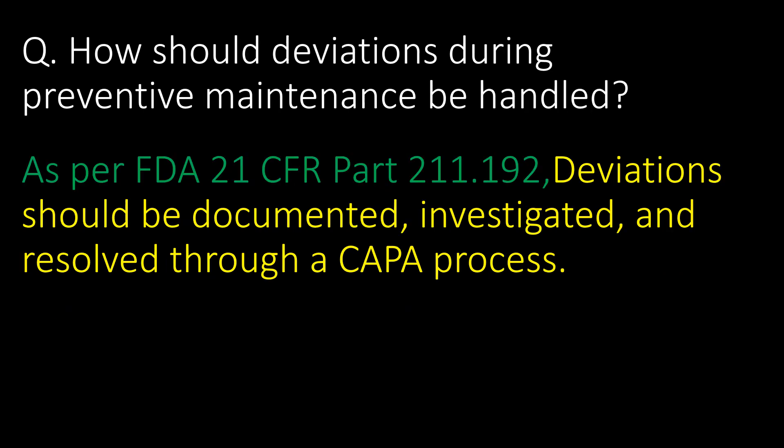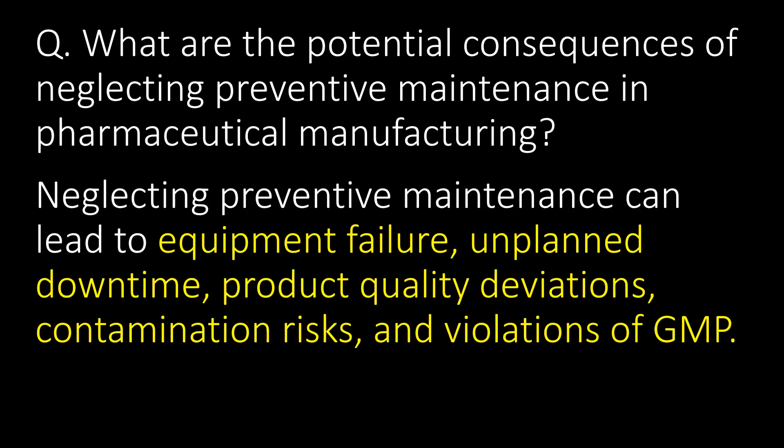How should deviations during preventive maintenance be handled? As per FDA 21 CFR Part 211.192, deviations should be documented, investigated, and resolved through a CAPA process — that is, a Corrective and Preventive Action process.